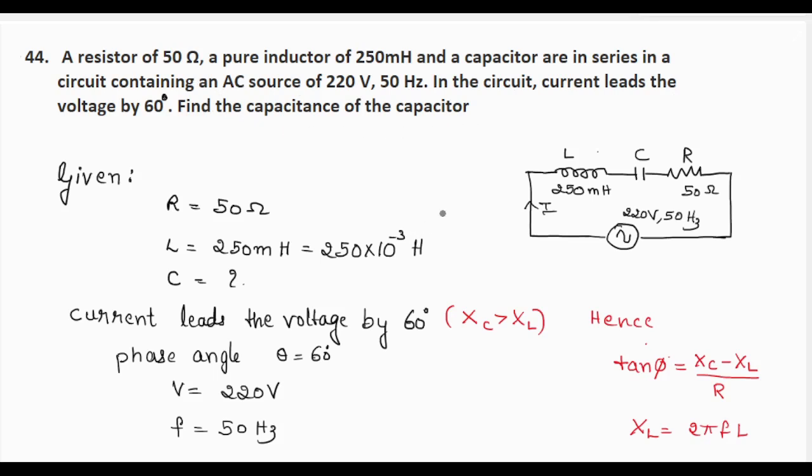So what is given: a resistor, an inductor, and a capacitor are connected in series. The value of resistor is 50 ohms. Value of inductor is 250 millihenry, that is 250 × 10⁻³ henry. The capacitor value is not given; we need to find the value of the capacitance.